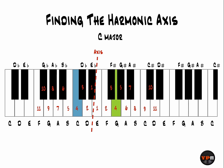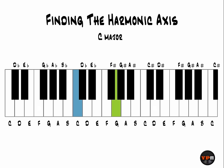Before moving on, I want to make sure we understand that the axis location depends on the key you are in. Every example so far has been in the key of C — please do not leave this video thinking the axis of negative harmony is always between E and E flat. For example, in the key of G, the tonic is G and the dominant is D. The axis is now between B and B flat, because that is the harmonic midpoint between the tonic and dominant. Counting from the new axis in G gives different numbers for each note than those in the key of C.